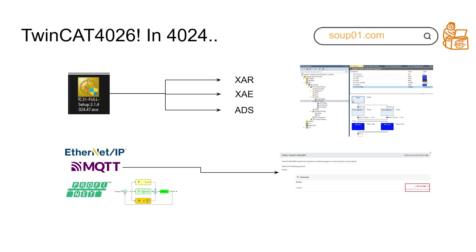Before introducing 4026, let me review what we did in 4024. When configuring XAE — the engineering environment — and XAR runtime in version 4024, you needed to go to Beckhoff's website, download a 1.5–1.6 gigabyte setup file, wait around 15 minutes, set up all your engineering tools and runtime, and then start writing your program. If you needed functions like MQTT, PID controller, etc., you had to search Beckhoff's website for the exact additional file to download.